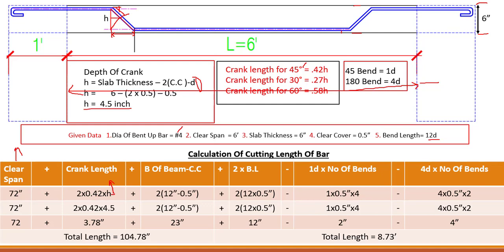If you have a 30-degree angle, you use 0.27 × H, and if it is 60 degrees, you use 0.58 × H. This is the inclined length of the crank — the portion from this position up to this position — which we account for separately from the clear span already taken.